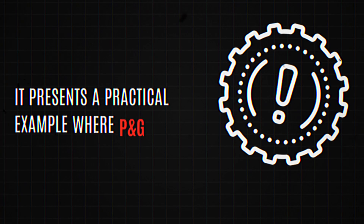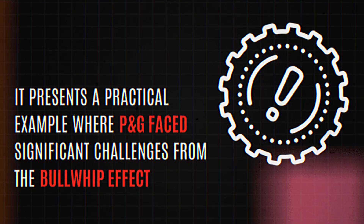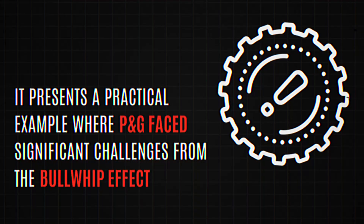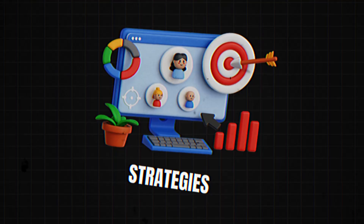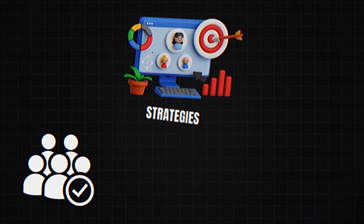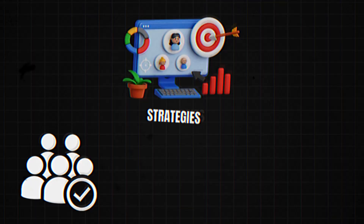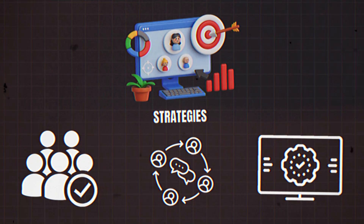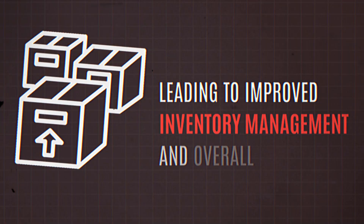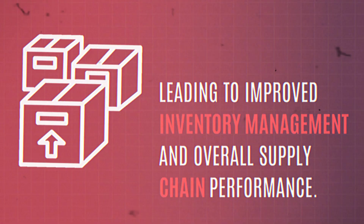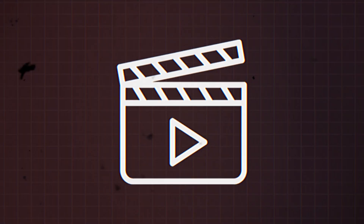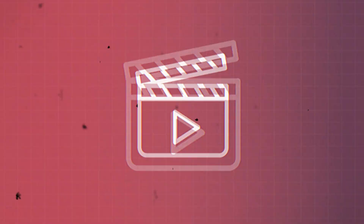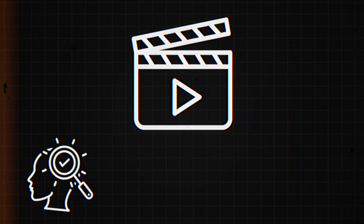A practical example shows that P&G faced significant challenges from the bullwhip effect. By implementing targeted strategies like improved demand forecasting, reduced order batching, and enhanced communication, P&G successfully mitigated these issues, leading to improved inventory management and overall supply chain performance.